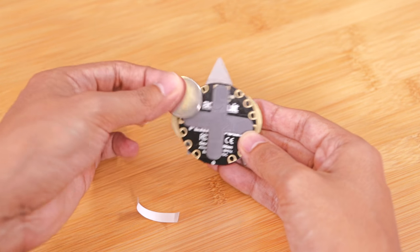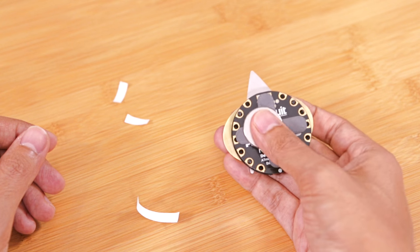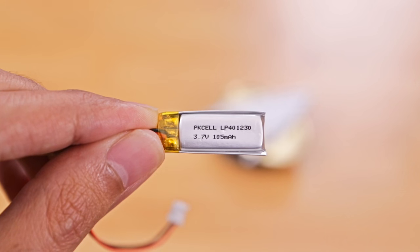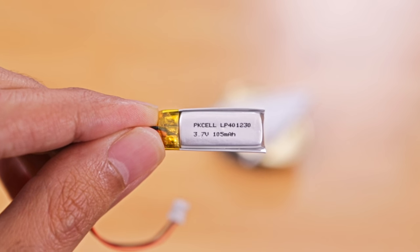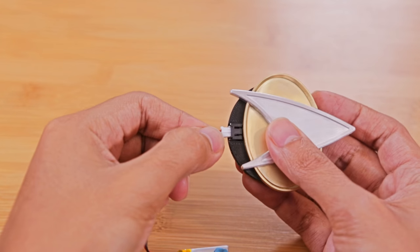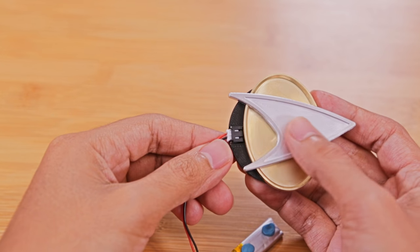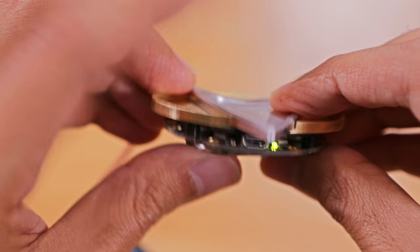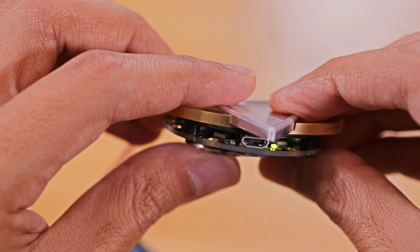So now I can use a neodymium magnet to secure it to my shirt. This LiPo battery will power the board for about an hour and it's small enough to hide behind the badge. You'll notice the red LED will blink whenever it detects it's being tapped.